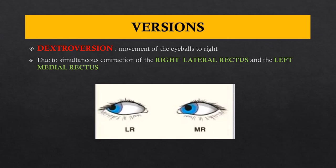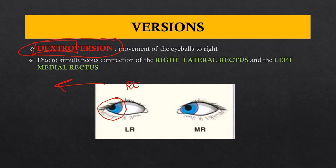Once you understand the movements of the medial and lateral rectus, it becomes easy to understand two types of versions: dextroversion and levoversion. Dextroversion is looking towards the right. In the right eye, dextroversion requires abduction, achieved by the lateral rectus. The left eye has to adduct, achieved by the medial rectus. Therefore, the right lateral rectus and the left medial rectus together contract to achieve dextroversion.